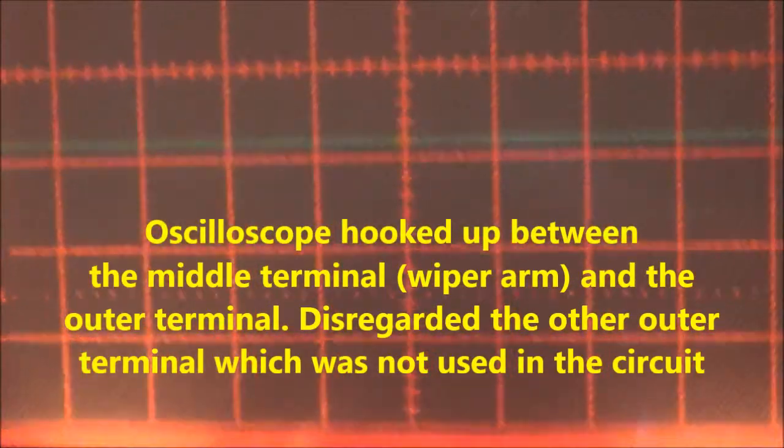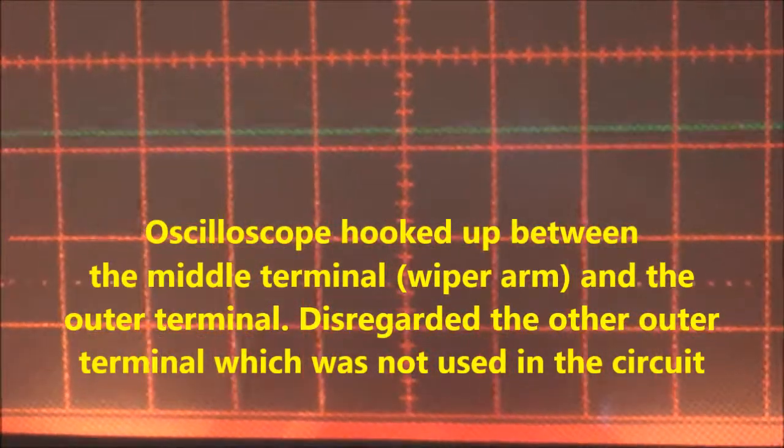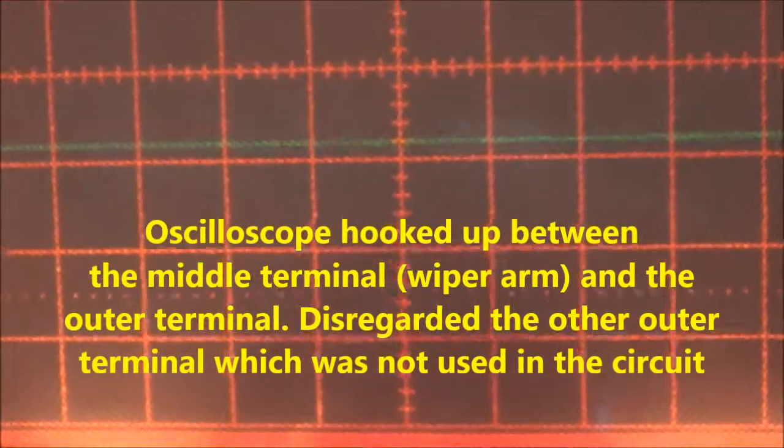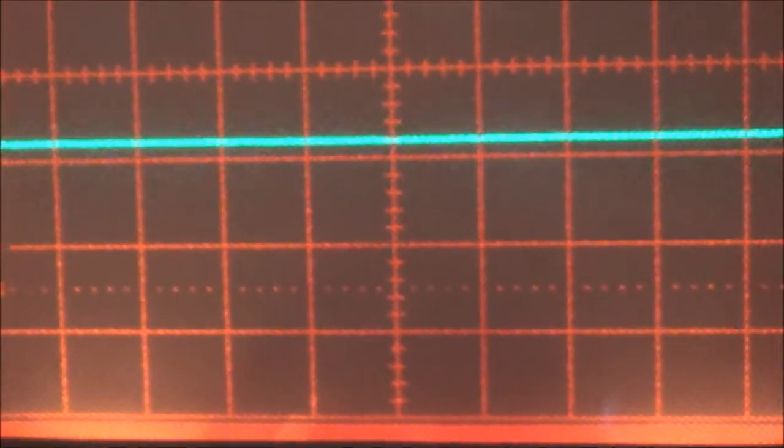I hooked up my oscilloscope across the potentiometer. This is a ganged potentiometer. So I'm feeding in a 1000 Hz square wave to both sides. I've basically got the trace here superimposed - one of the traces is basically superimposed on the other.